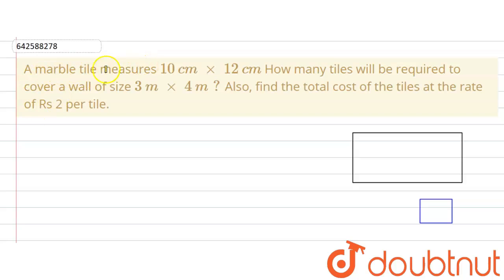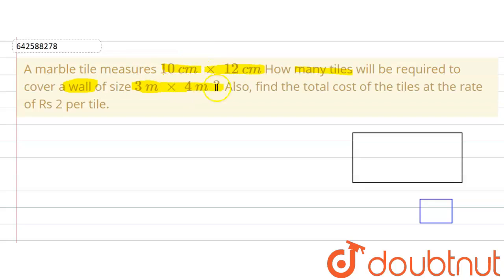The given question says that a marble tile measures 10 cm by 12 cm. How many tiles will be required to cover a wall of size 3 meters by 4 meters? Also find the total cost of tiles at the rate of rupees 2 per tile.